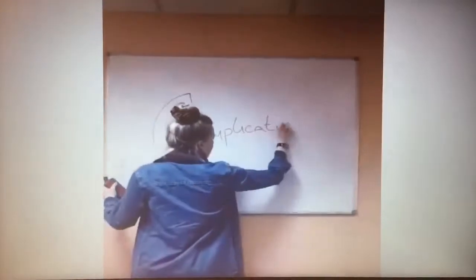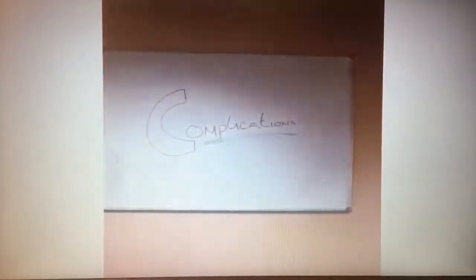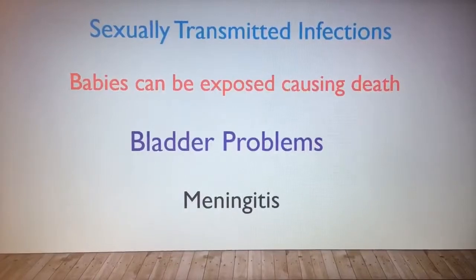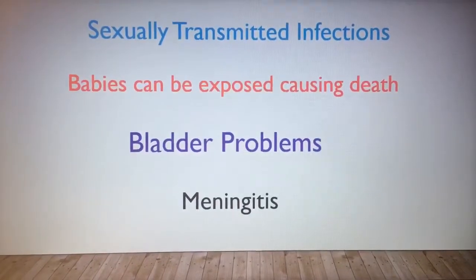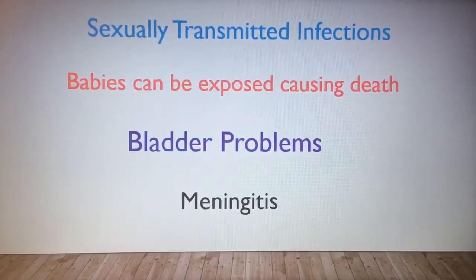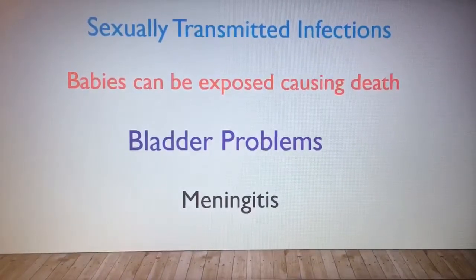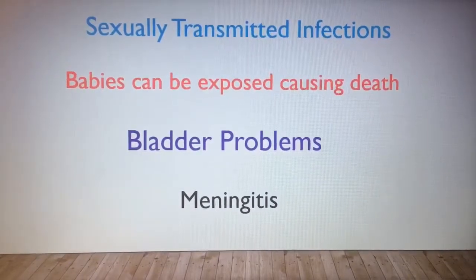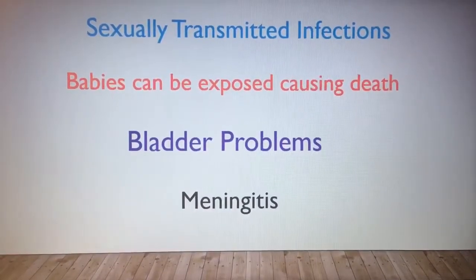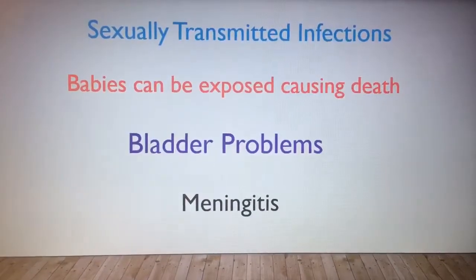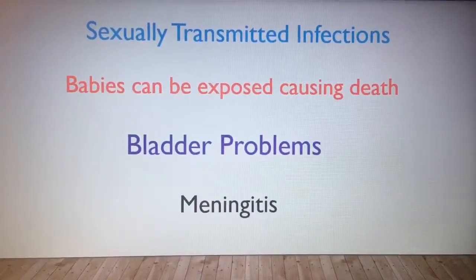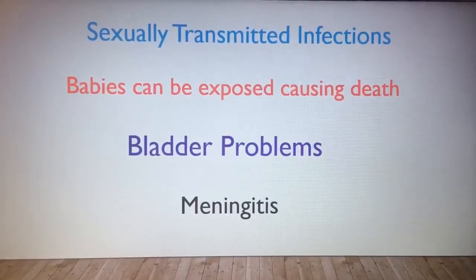Complications. There are many complications associated with genital herpes. It can increase the risk of contracting or transmitting other STIs, including AIDS. Babies born to infected mothers are exposed to the virus, which can result in brain damage, blindness, and even death. It can also cause inflammation of the urinary tract, causing bladder problems. In rare instances, it can cause meningitis by causing inflammation of the cerebrospinal fluid.